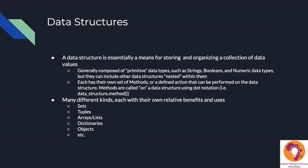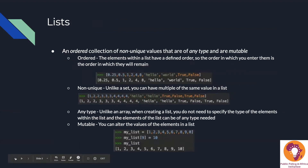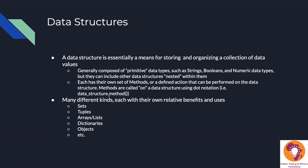Each data structure has its own set of methods, or defined actions that can be performed on it. Methods are called using dot notation — the data structure, then a dot, then the method with parentheses at the end. Parentheses are important because they signify it's a method; without them, it would be considered an attribute. There are many different kinds of data structures, each with their own benefits. Today we're mostly talking about lists, touching a little on tuples, while objects will be later in the course.